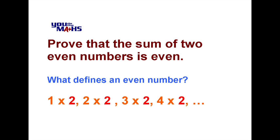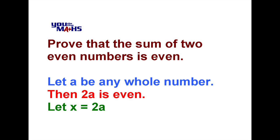So what we can do is define any whole number a and then say if we multiply that by 2 the result is even. So we know that 2a is even, and if we do the same thing with any whole number b then 2b must be even as well.